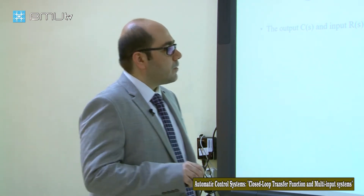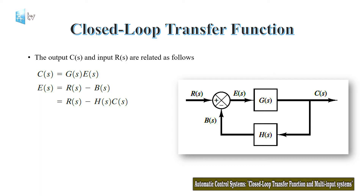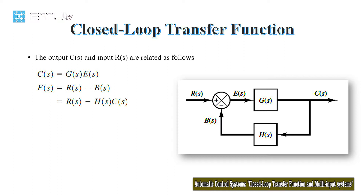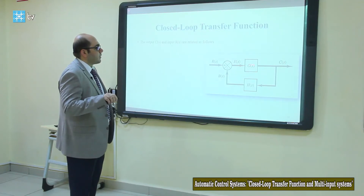We learned in the previous class this is the block diagram of a closed-loop system. Let's find the transfer function for a closed-loop system. We learned that for a single block diagram with the transfer function G(s), or gain G(s), with the input and output.